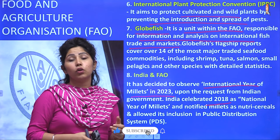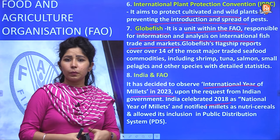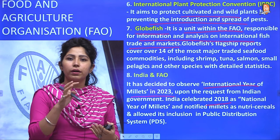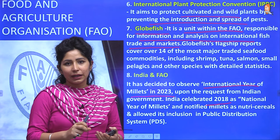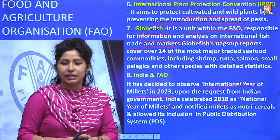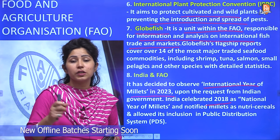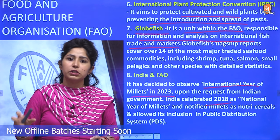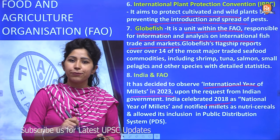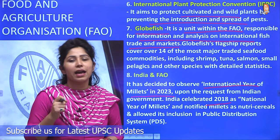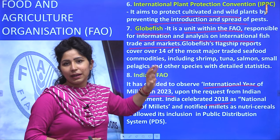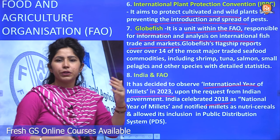The GlobeFish Initiative is a unit within FAO, the Food and Agriculture Organization. Fish is an important source of food and trade globally, but fish trade can spread diseases and many fish are invasive species that affect local biodiversity. GlobeFish is responsible for providing information and analysis on international fish trade and markets. There are some types of fish specifically under the mandate of GlobeFish, but those are not very important from an examination point of view.